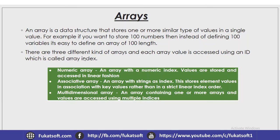There are three different types of arrays: numeric array, associative array, and multi-dimensional array. We can access an array using an index. A numeric array is an array with a numeric index, and values are stored and accessed in a linear manner.